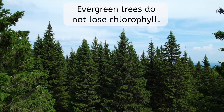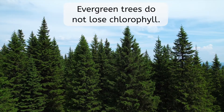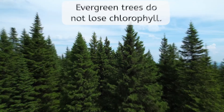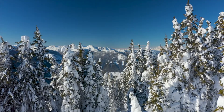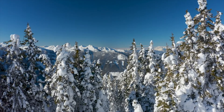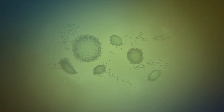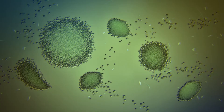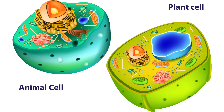Some trees, called evergreen trees, do not lose their chlorophyll and stay green all year. They tend to have needles instead of leaves and have multiple growing seasons throughout the year, even in harsh conditions. Chloroplasts are perhaps the most important difference between plant and animal cells, giving them the ability to do photosynthesis. But there are a couple of other differences too — let's take a look.